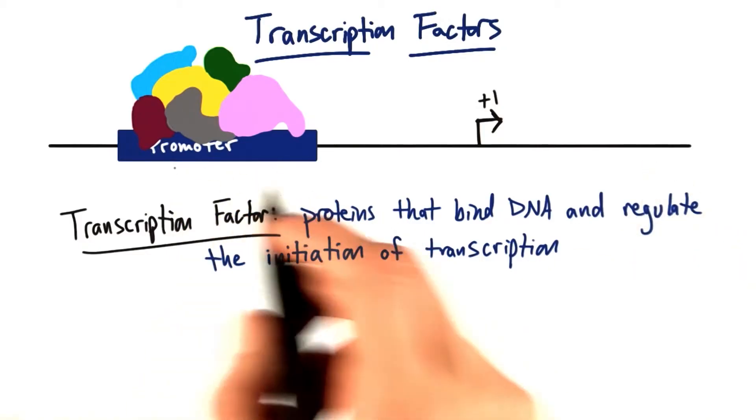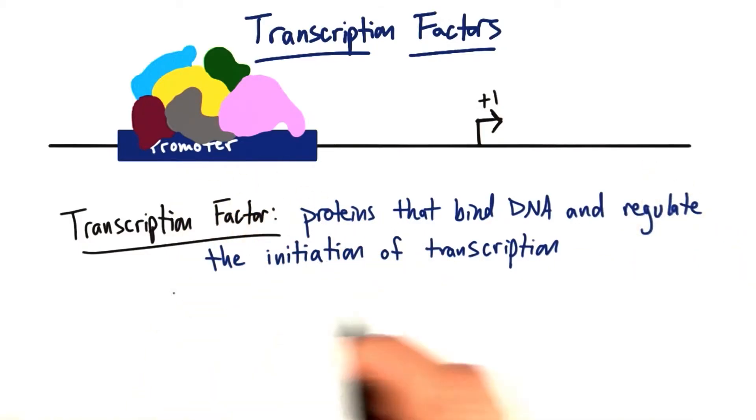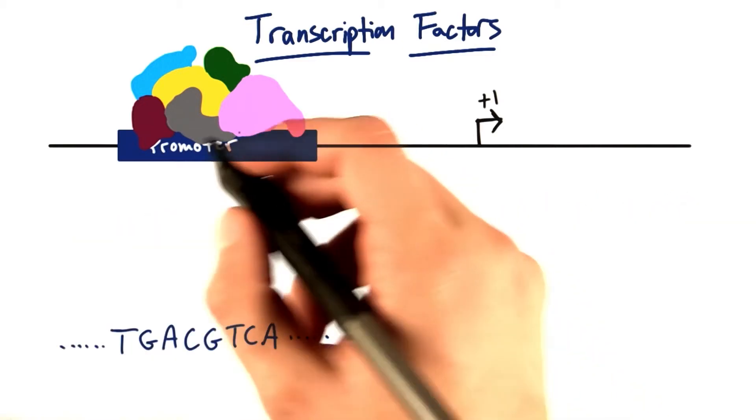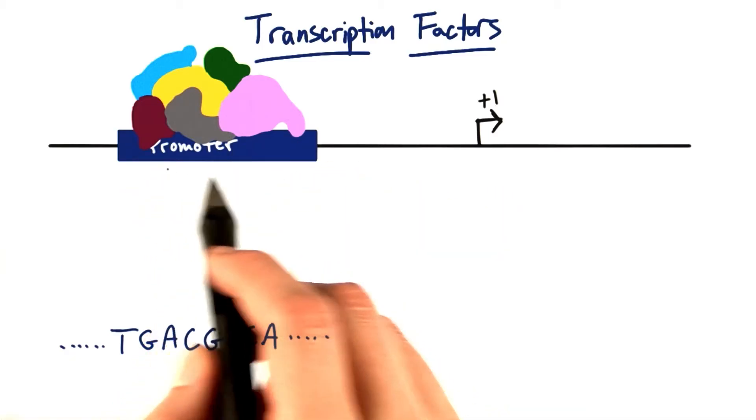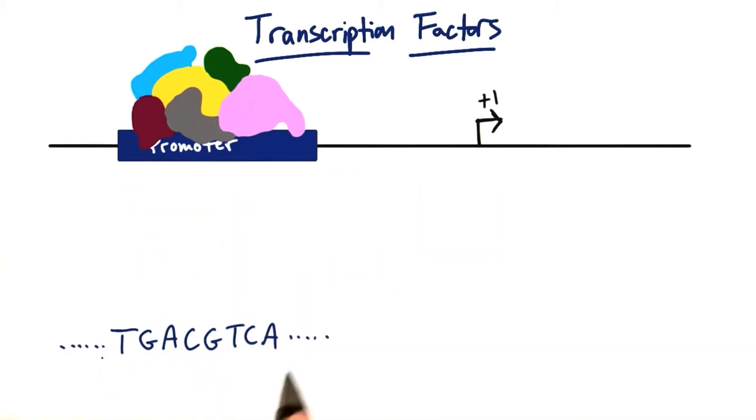Now, although this is ultimately chemistry, we've become pretty good at representing chemistry with our letter symbols. Let's imagine that one of these transcription factors up here, one of these proteins, is actually binding to a very specific sequence here in the DNA: TGACGTCA.